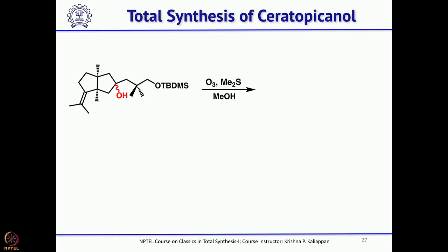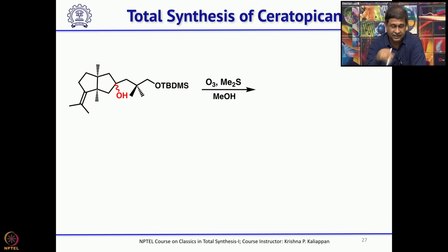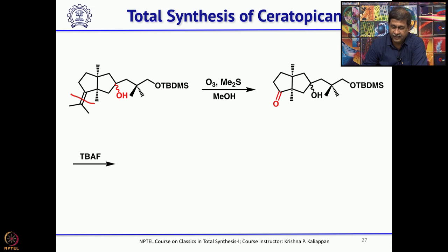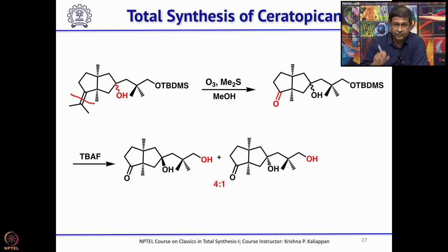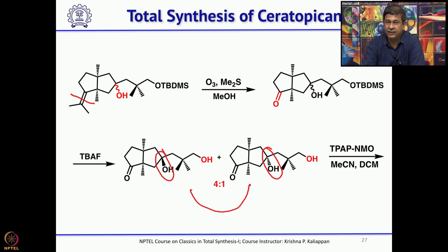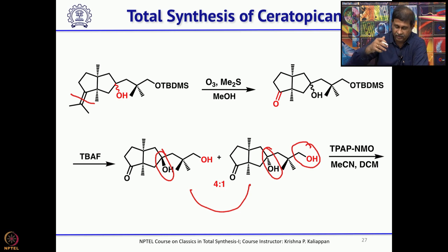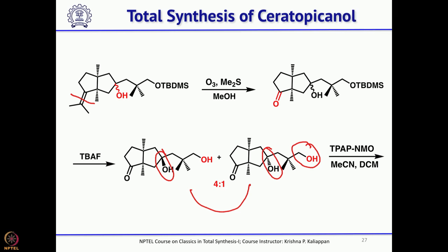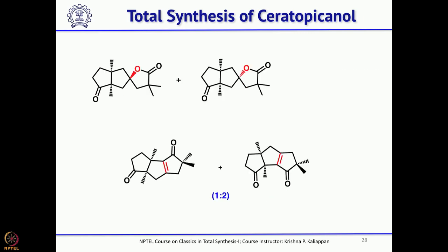Removal of the TBS group gives the primary alcohol, which can be oxidized and cyclized. But what is needed is a ketone, so do a Swern oxidation to get the ketone, then remove the TBS group. When you remove the TBS group, you can separate the two diastereomers — a beta-alcohol and an alpha-alcohol. Now, treating with TPAP — tetra-n-propylammonium perruthenate — with NMO as co-oxidant in catalytic amount: this oxidizes the primary alcohol to the aldehyde, and immediately the tertiary alcohol cyclizes to form a lactol, and further oxidation gives the corresponding lactone. Once you have this lactone, treatment with methanesulfonic acid and P2O5 will hydrolyze it.